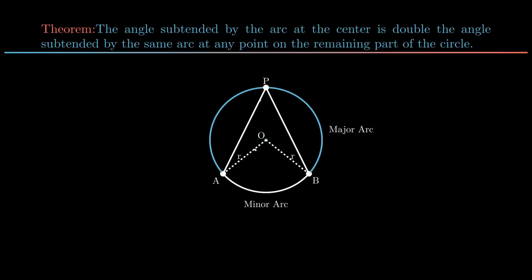To prove angle AOB as twice of angle APB we need to construct a line from point P such that it passes through point O. From figure angle APB can be written as the sum of angle 1 and angle 2, while angle AOB can be written as the sum of angle 3 and angle 4.